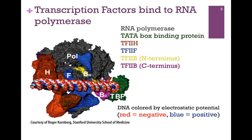Here we have a surface model of transcription factors and RNA polymerase bound to a promoter element. The RNA polymerase is in gray, the TATA box binding protein is in green, TF2H is in burnt orange, TF2F in blue, the N-terminus of TF2B is in yellow, and the C-terminus is in purple. The DNA has been colored by electrostatic potential — the more negative regions highlighted in red represent the phosphodiester backbone, and the more positive regions in blue represent the bases. As you can see, a very complex structure forms at that promoter.